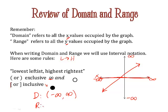For the range, that's all the y values occupied by the graph. Take the same line, collapse it to the y-axis. If you fold it on the y-axis, it's going to follow right along. Every one of these y values is going to be filled up.